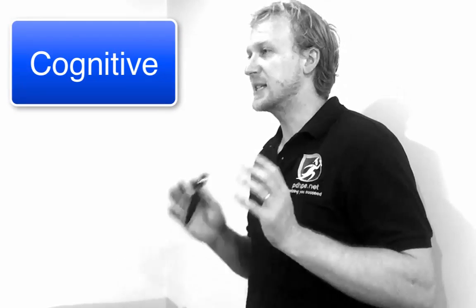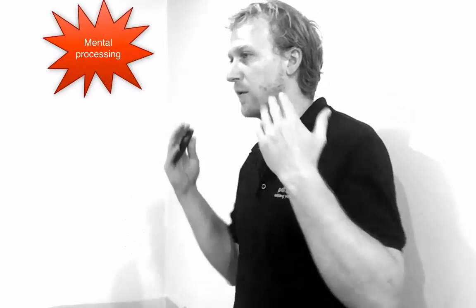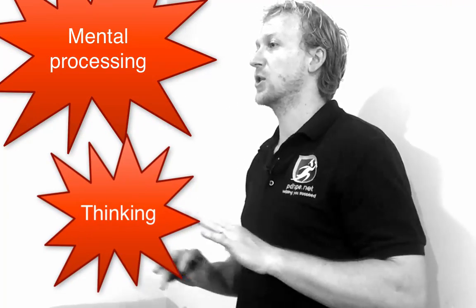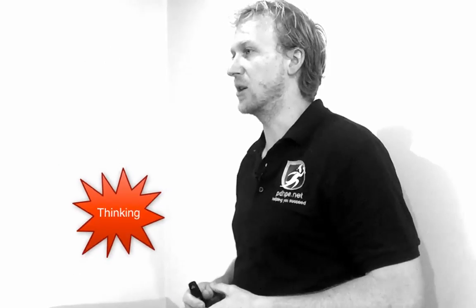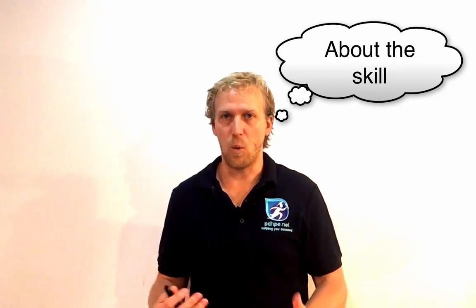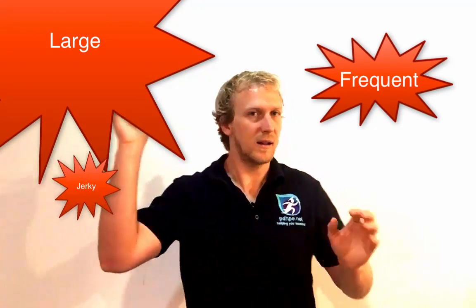The cognitive stage is the first stage of skill acquisition and refers to all mental processing and thinking. The word cognitive means mind — it's about your brain functioning. In this stage, athletes are constantly thinking about the skill: what movements, what muscles, where they put their foot. If they're throwing, they're thinking about exactly what they're doing, and they'll have large, frequent errors with jerky movements.